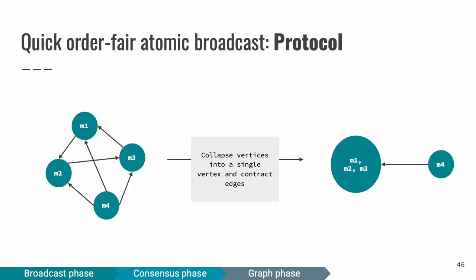Now again, we collapse vertices into a single vertex where there exists a path from one node to another one and we contract edges. In this case, we can see that we can collapse message 1, message 2 and message 3 vertices into one. Now, because we have more than one vertex in the graph, we order vertices in a deterministic order and choose first a vertex that has no incoming edges. In this case, this is the vertex M4.